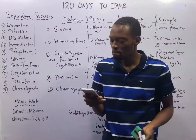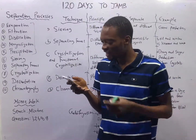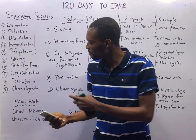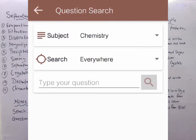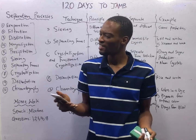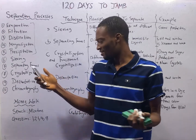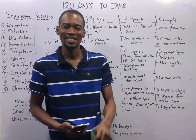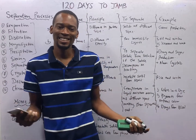Ladies and gentlemen, open your Flash Nenas Jam application. Go to question search. Type 'mixture', answer all the questions. Type 'separating techniques', answer all the questions. And that is it for this episode. See you in the next episode.